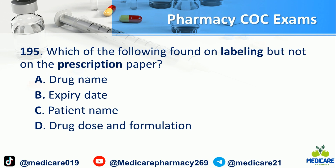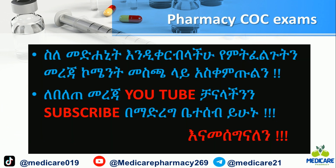Number 195: Which of the following is found on labeling but not on the prescription paper? A) Drug name. B) Expiry date. C) Patient name. D) Drug route and formulation. The answer is B.